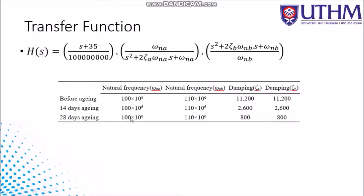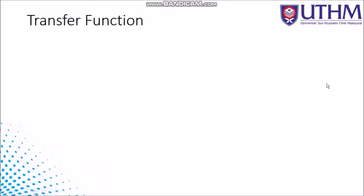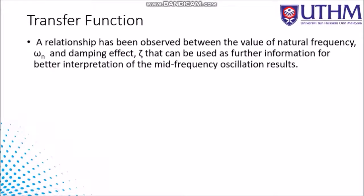This formula represents the transfer function of the response: this part is for the low frequency region, this is the mid-frequency region, and this is the high frequency region. As shown in the table, there is no change before and after the aging process in the natural frequency — values of 'a' and 'b' remain the same. However, damping 'a' and damping 'b' values have been reduced.